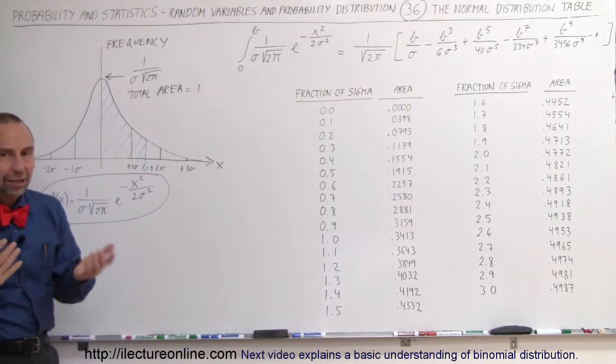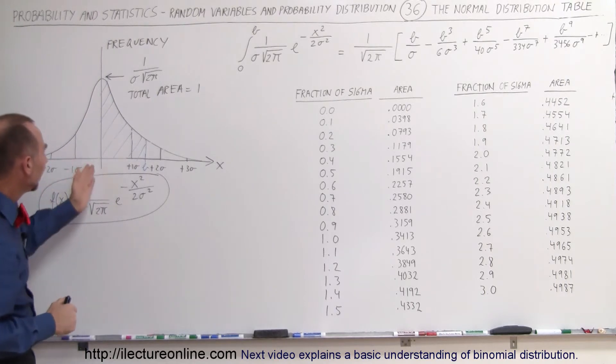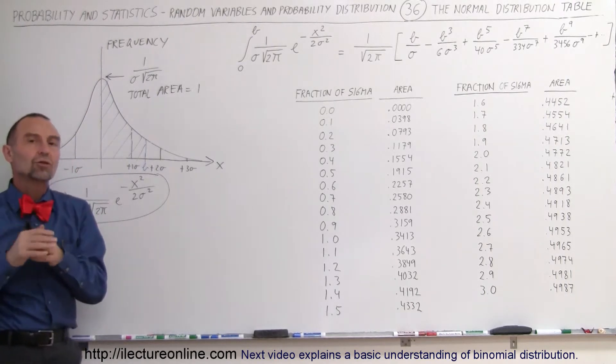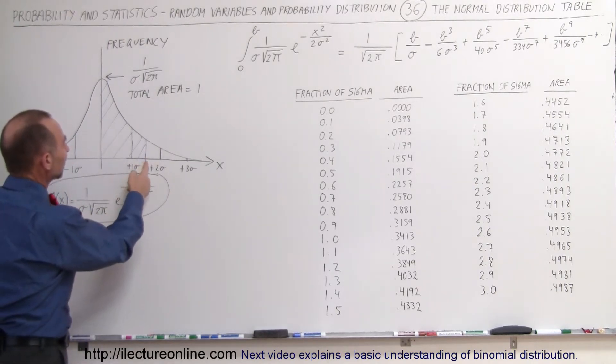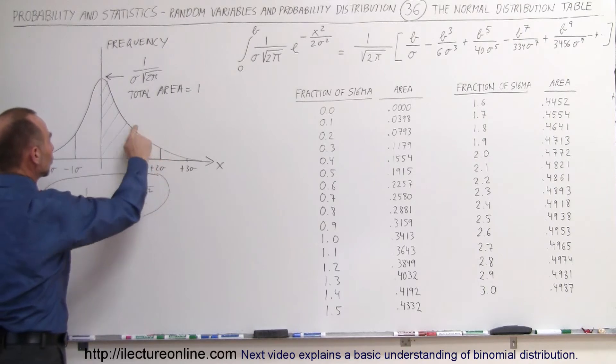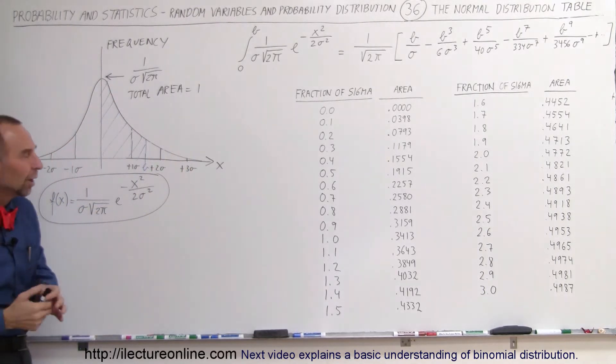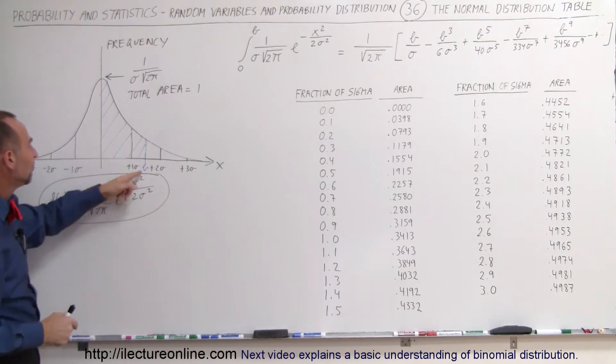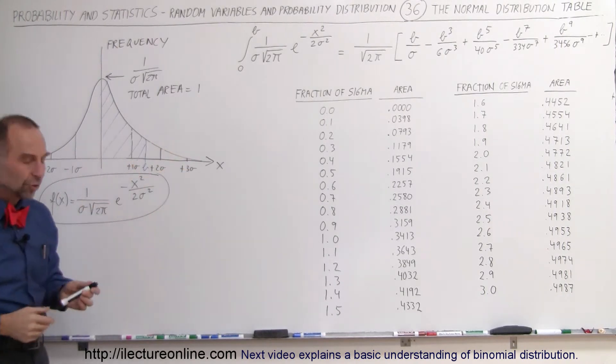Now, if we get a computer or calculator, we can start plugging in values for b, and b is usually expressed in terms of a fraction of a sigma. For example, let's say that b was 1.5 sigmas. What's the area underneath this curve as a function of the whole area? Of course that would be a number less than 1, somewhere between 0 and 1.